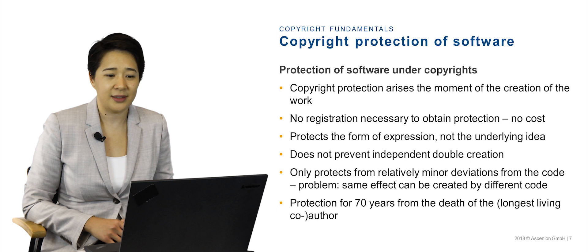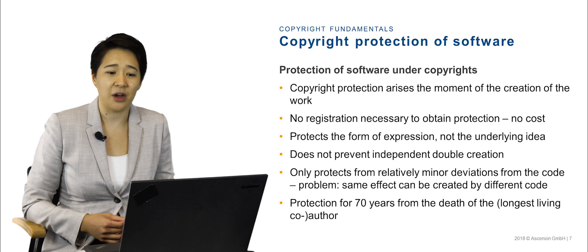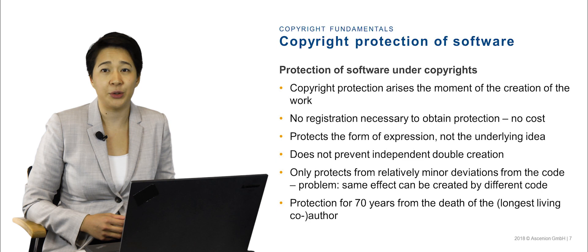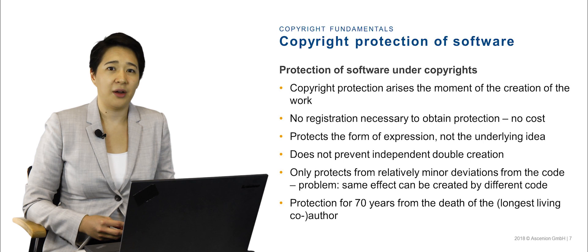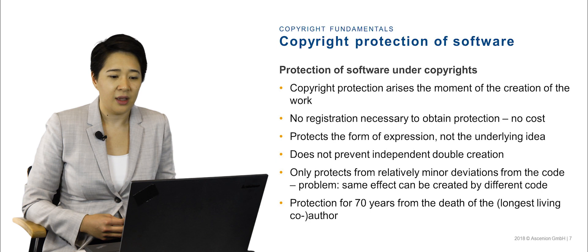Copyright protection of software. Software can be protected under copyrights. The copyright protection arises the moment of the creation of the work — in terms of software, this means as soon as the code is programmed or written. Unlike patents, there's no registration or costs necessary to obtain protection under copyrights, though in some jurisdictions it may be advantageous to register. Copyrights help to protect the form of the expression but not the underlying idea, and copyright protection also does not prevent independent double creation.